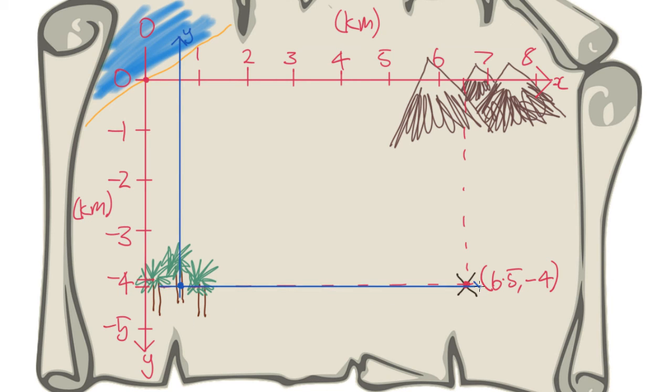What made sense to Bob, however, was to place the origin where his village was, so that on Bob's map, the coordinates of the treasure were at 6.60 kilometers.